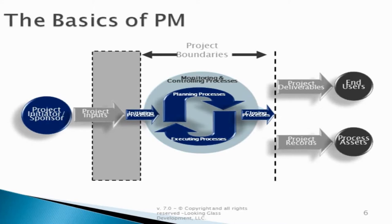The planning processes work in a loop with the executing process group. Those two steps — planning and executing — can be done once or many times, depending on the methodology your team is choosing to use. Deciding when you're done planning and executing are your eyes and ears for the project, referred to as your monitoring and controlling process groups. Eventually, monitoring and controlling decides that you've done as much as you possibly can, and it's time to move the project into the closing processes.